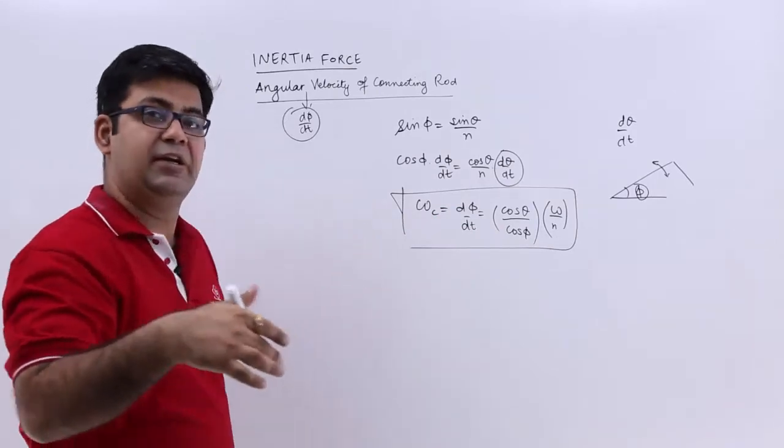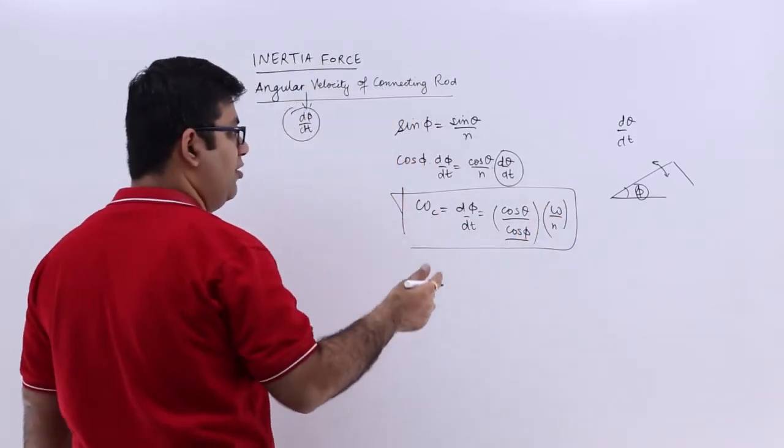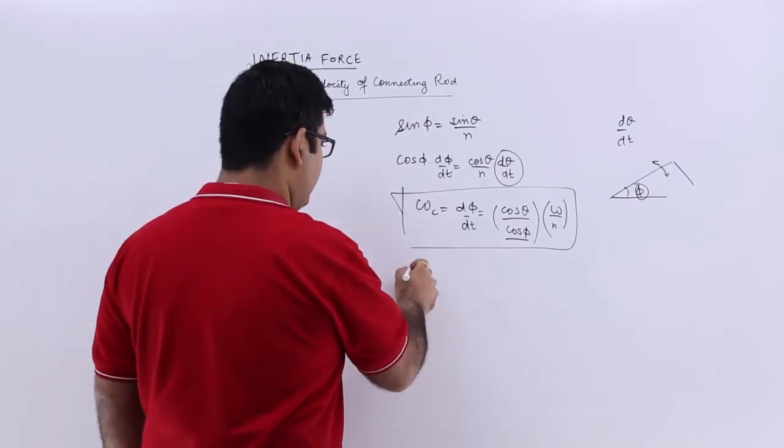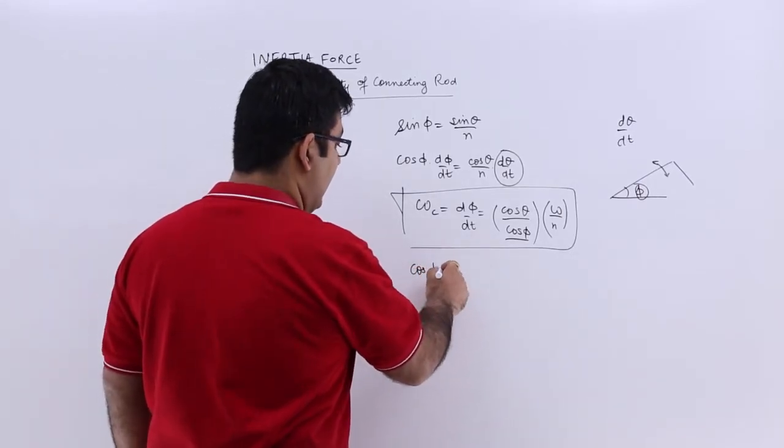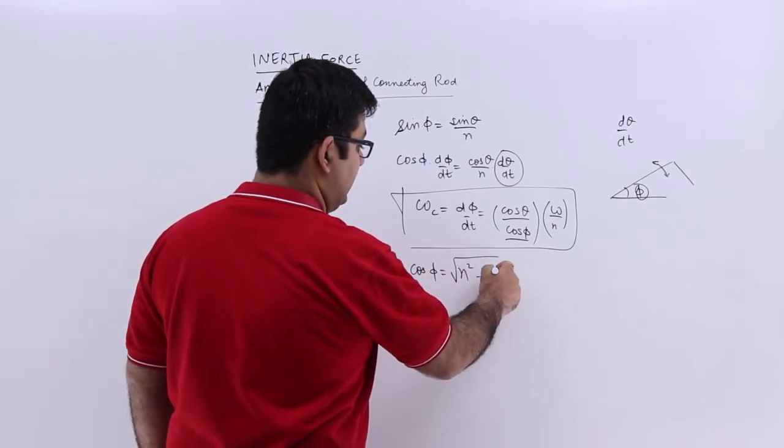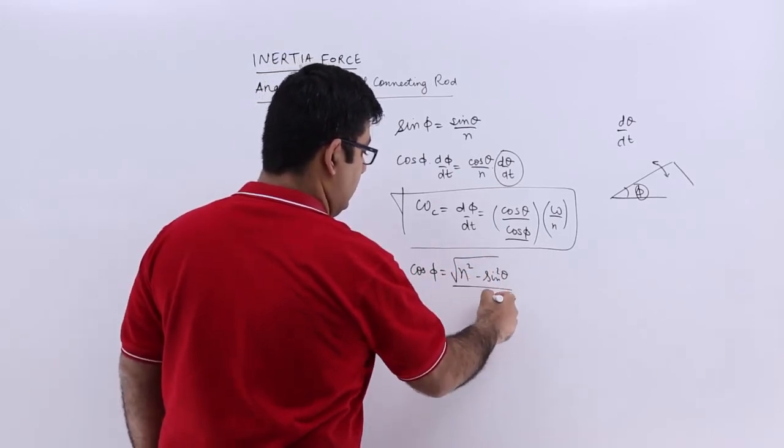Let us manipulate this a bit and get the value for cos phi. From the previous analysis we have got the value of cos phi as under root n square minus sin square theta upon n.